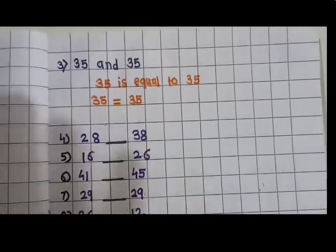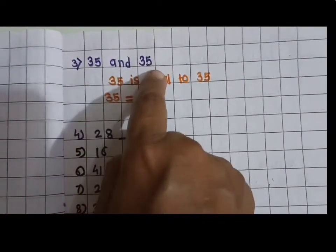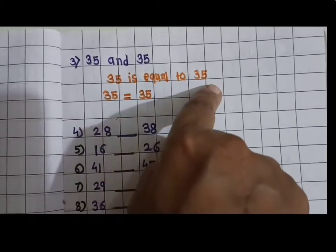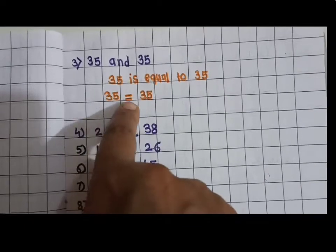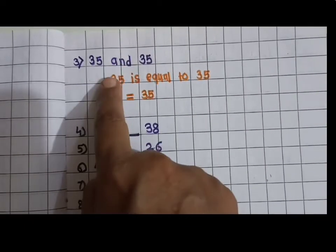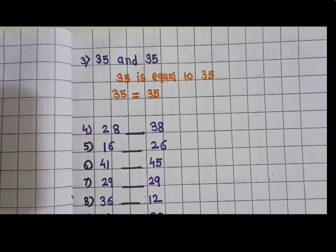Now next, 35 and 35. Children, 35 is equal to 35. So 35 and you have to put this equal sign here. You can take different examples also.